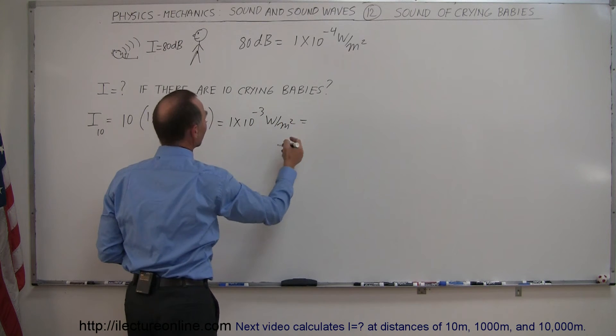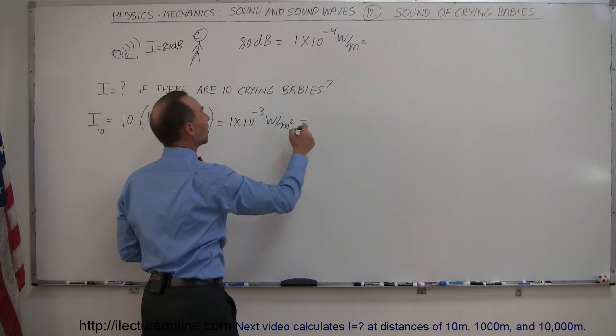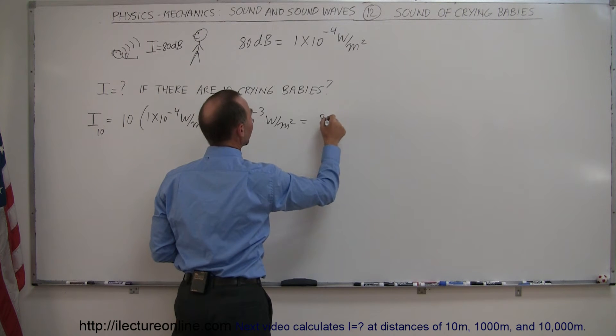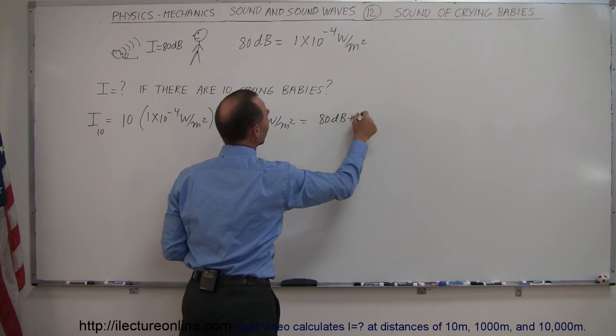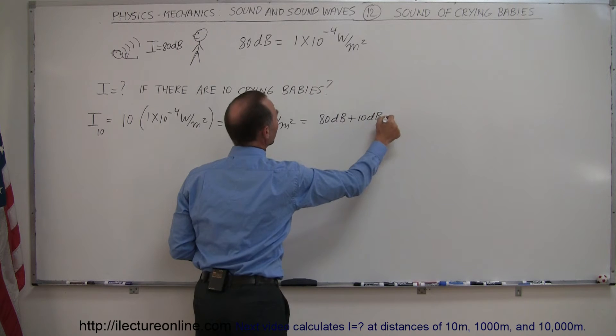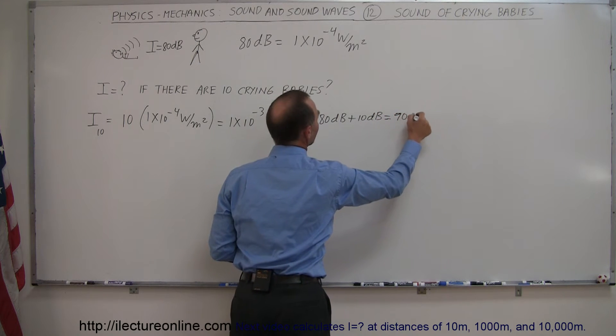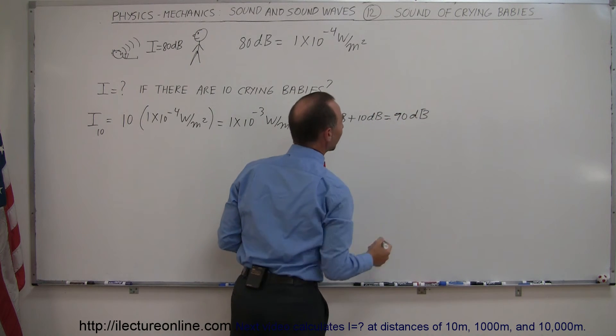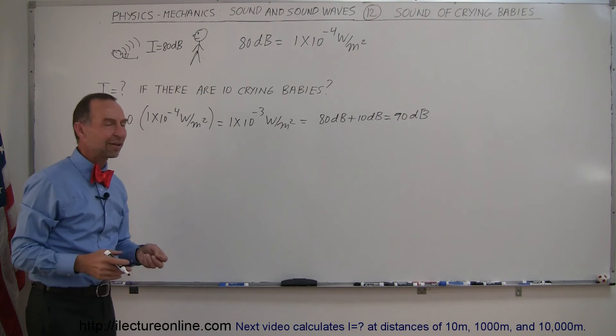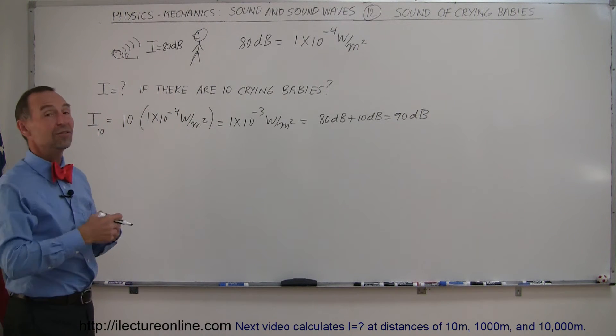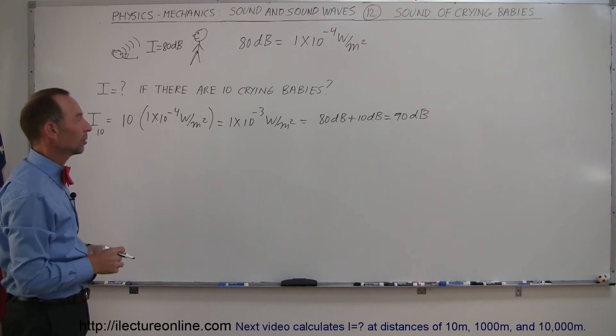That would then of course be 80 plus 10 decibels, which is 80 decibels plus 10 decibels, and that would be equal to 90 decibels. So simply by increasing the number of babies by a factor of 10, that would increase the decibel level by 10 decibels.